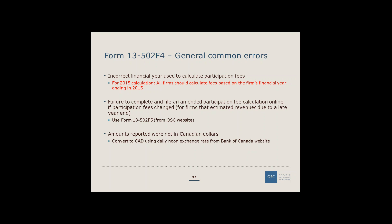Another common error is that firms that estimated revenues have not been recalculating internally once audited financial statements become available. It is a requirement to internally recalculate. If your participation fee changes as a result, you must file an amended Form 13502 F5. If your revenues change but the participation fee itself does not change, you are not required to refile.